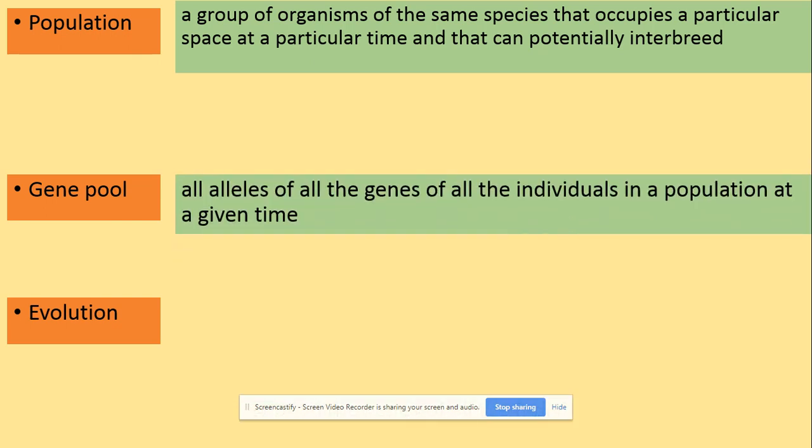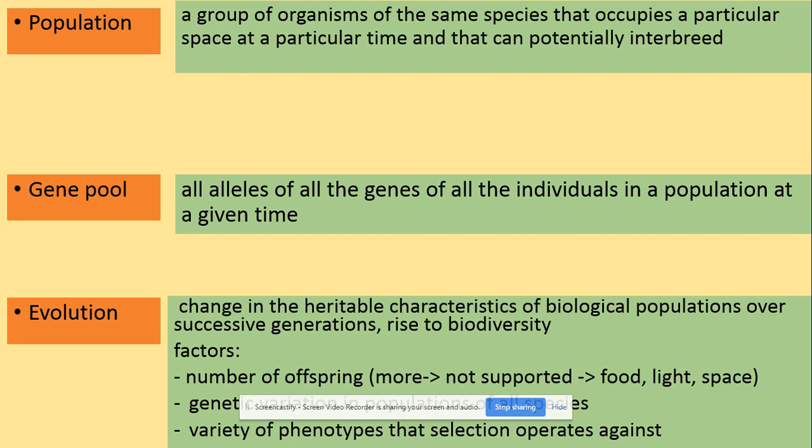The gene pool is all of the alleles of all of the genes of all of the individuals in the population at a given time. Evolution is a change in the heritable characteristics of biological populations over successive generations, and the factors affecting evolution include number of offspring, genetic variation in populations, and variety of phenotypes that selection operates against.